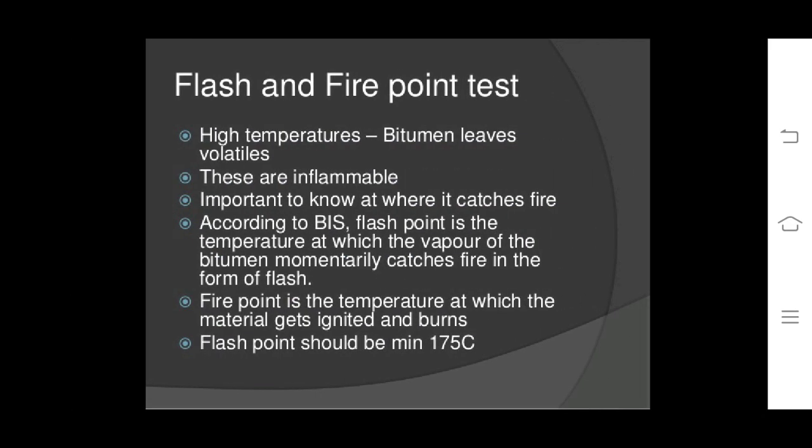Flash and fire point test: this is a most important test for bitumen to record its behavior at high and low temperatures. Bitumen is an inflammable material and it is important to know where it catches fire. According to the Bureau of Indian Standards, the flash point is the temperature at which the vapor of bitumen momentarily catches fire in the form of a flash, and the fire point is the temperature at which the material gets ignited and burns totally. The flash point should be a minimum of 175°C.